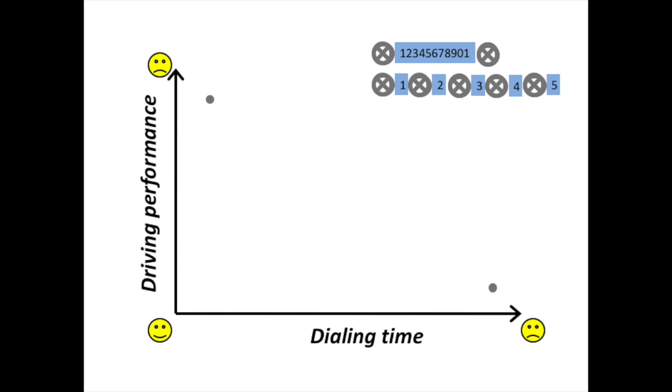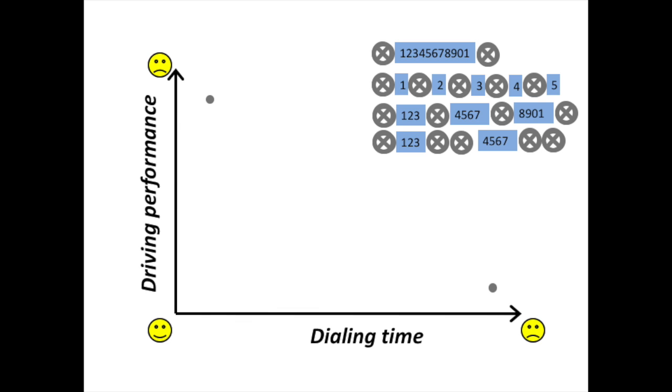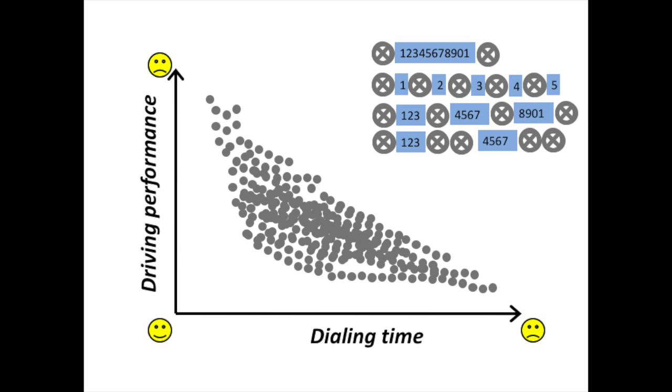Driving performance will be a lot better with this strategy compared to the previous one. However, dialing will take a lot longer. In between these extremes are various other strategies in which digits are dialed in groups. The exact strategy depends both on how many digits are dialed in one group, but also on how much time is dedicated to steering in between. This cloud of points illustrates what the range of performance in this task setup might look like.